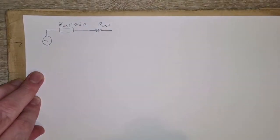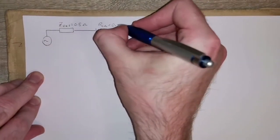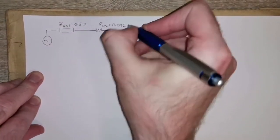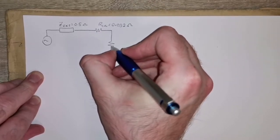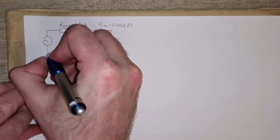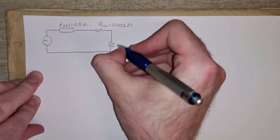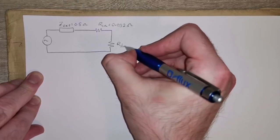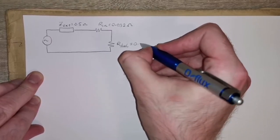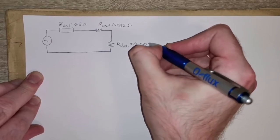And we have the resistance of the steel wire—sorry, the steel circuit protective conductor—and we calculated that to be 0.0828 ohms.